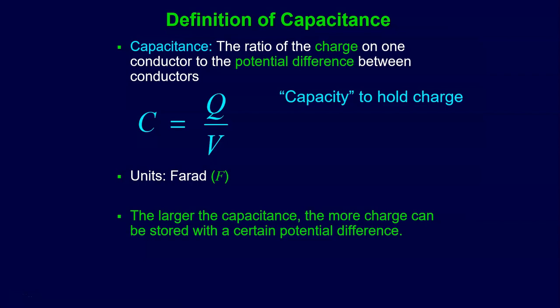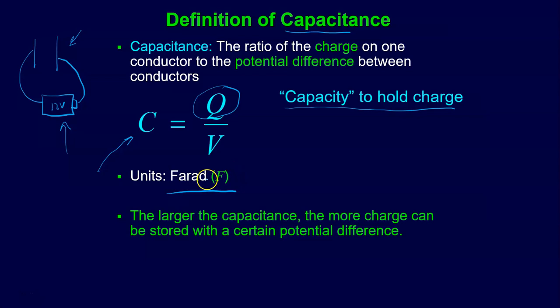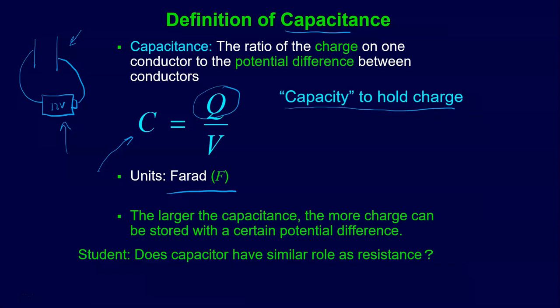Here's our definition of capacitance. Capacitance is just a fancy way of saying our capacity to hold charge - it's the ratio of the charge on one of your conductors over the potential difference between the conductors. So capacitance is how much charge you get on one of these plates divided by the potential - charge per potential. The units are farads, abbreviated F. The larger the capacitance, the more charge can be stored at a given potential difference. A student asks if capacitors have a similar role to resistance - no, it's a different role, and these are distinctly different things than resistors.